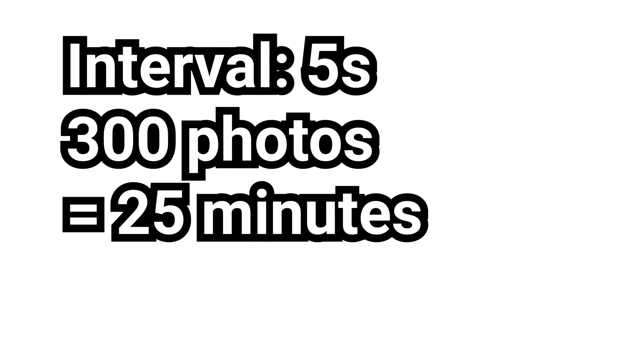You start by setting the interval — the time between each shot — and then decide how many shots you want the camera to take. Once you hit start, the camera does all the work. For example, you might set an interval of 5 seconds and capture 300 shots over the course of 25 minutes. The result? A stunning time-lapse video or a series of stills that you can stack to create artistic effects like star trails.